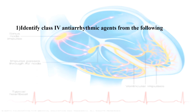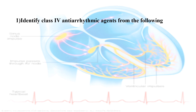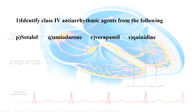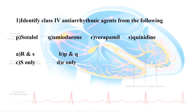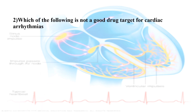First question: Identify class 4 anti-arrhythmic agents from the following. Options are: Sotalol, Amiodarone, Verapamil, Quinidine. Class 4 anti-arrhythmic agents are calcium channel blockers. Verapamil is the correct answer, so option C is the correct answer.